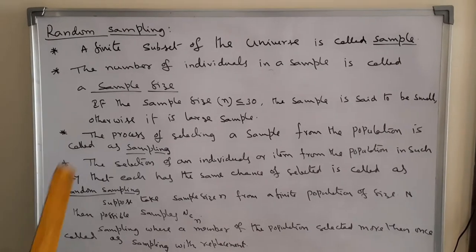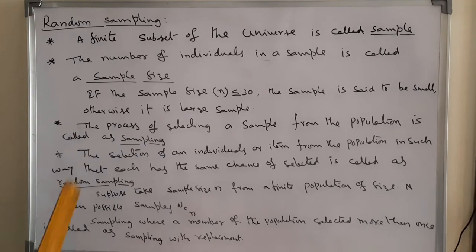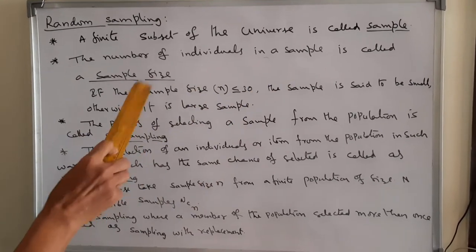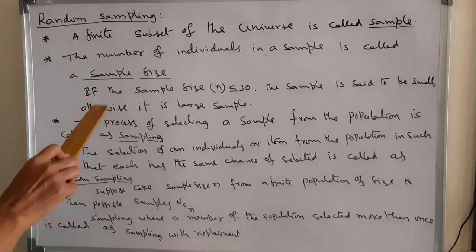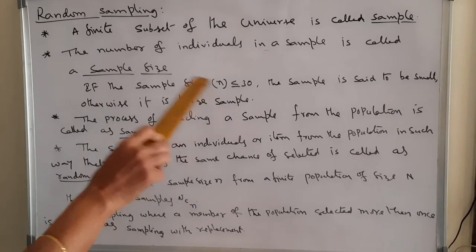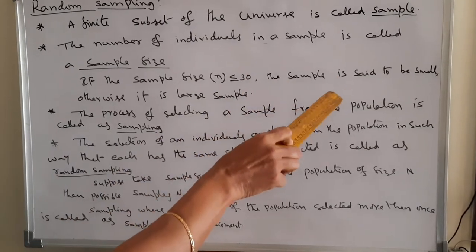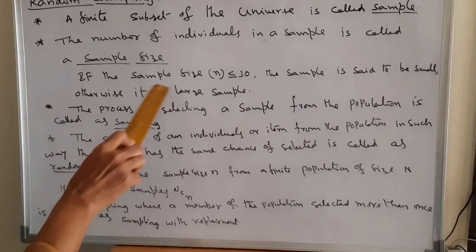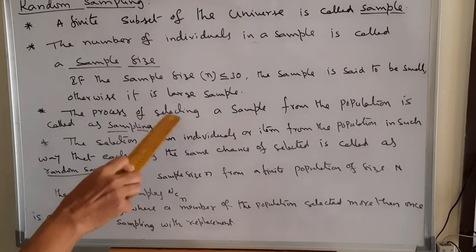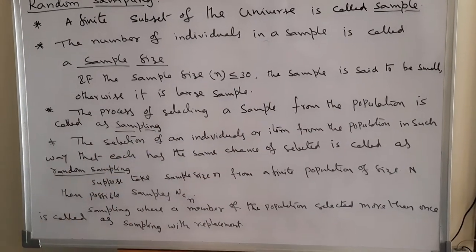A finite subset of the universe is called a sample. The number of individuals in a sample is called sample size. If the sample size is less than 30, it is denoted by small n and then the sample is said to be small; otherwise it is large.